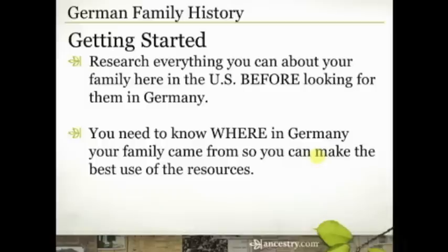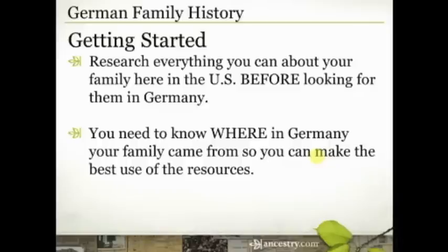They had civil registration where they recorded birth, marriage, and death records. That did not start until 1875. So if your family was still in Germany after 1875, you may have a chance between 1875 and 1918 of finding birth, marriage, or death records for your family. Just keep in mind that the privacy laws for birth records in Germany is 110 years, which really means 1871 to 1903 is the only access you're going to be able to find for those birth records. So we're talking about a really narrow window of access to Germany-wide vital records, which is why knowing where your family came from in Germany is so critical.